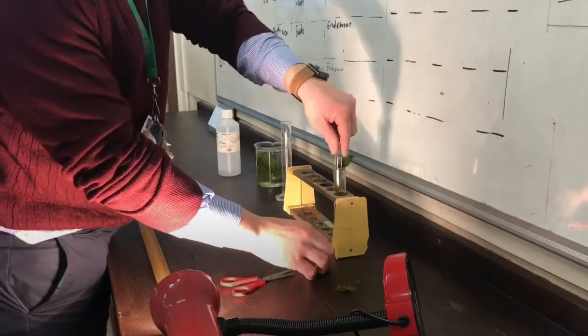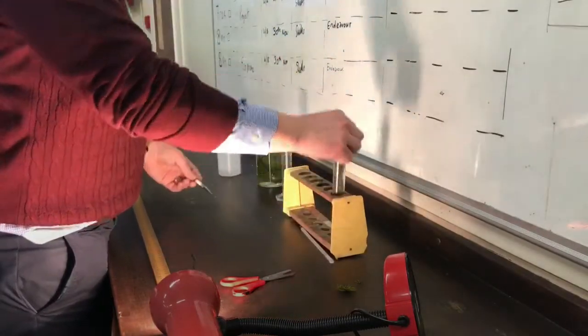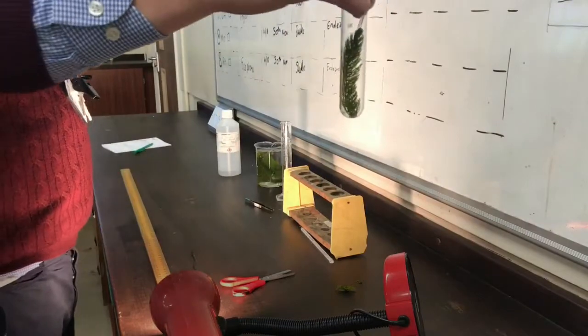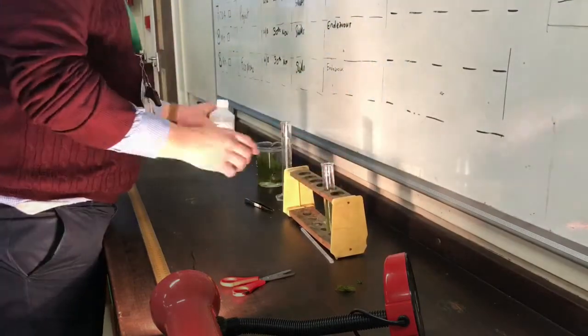This will then go in the test tube. Actually put it in the wrong way around. You should put the snipped end upwards so you can see the bubbles clearly.